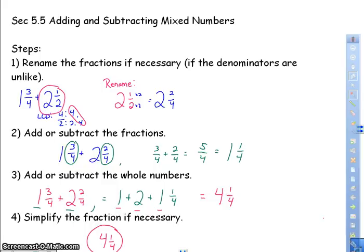So the steps are going to be very similar. The first thing you're going to do is to rename the fraction if necessary. Now remember, renaming means you're going to name them with a denominator that is the same. So I have 1 3/4 plus 2 1/2. I found my LCD to be 4, so I'm going to rename 2 1/2 by multiplying the numerator and denominator by 2, and I get 2 2/4.